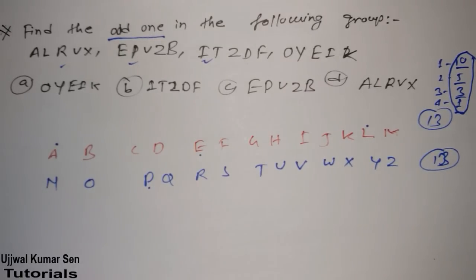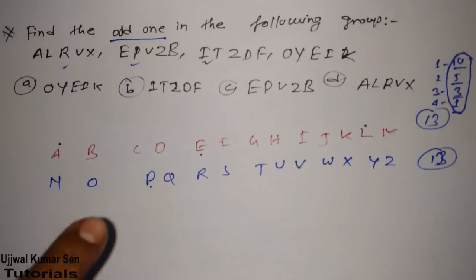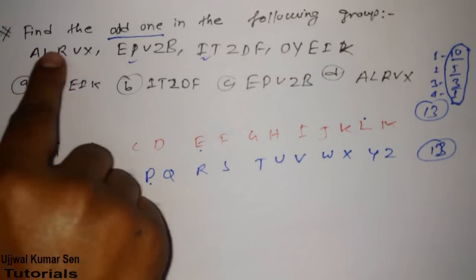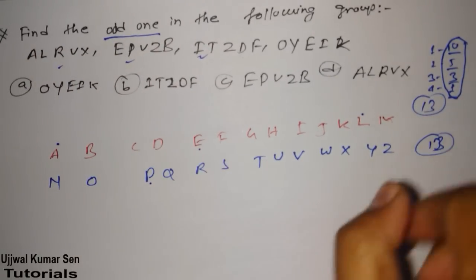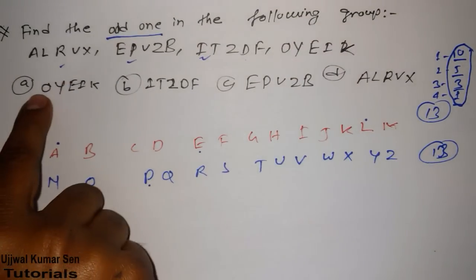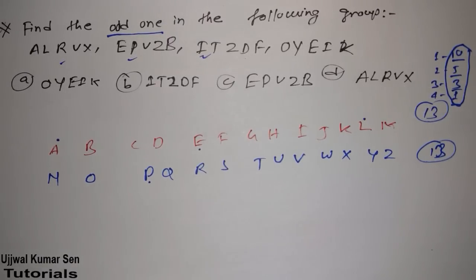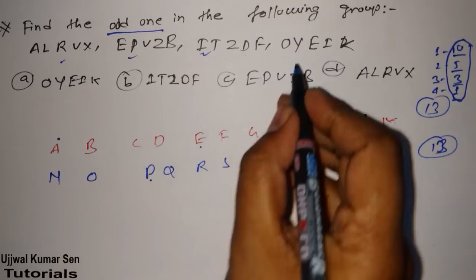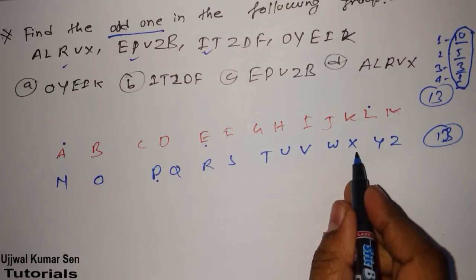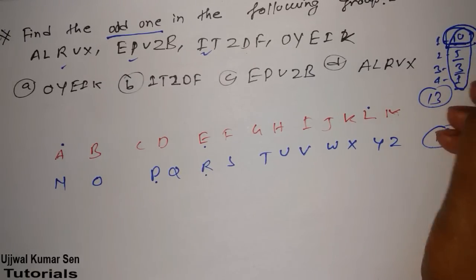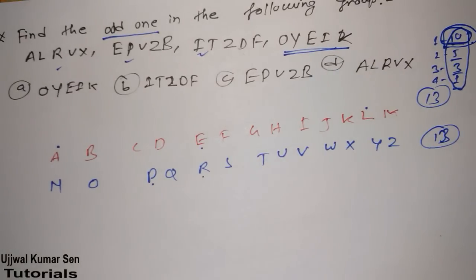Here is an important tip for the examination: if you are in this kind of situation and you have already found that three options follow the same series, you don't need to solve the question anymore — the remaining one is the right answer. You can mark it. But let me still show you where the odd one is: after O, checking the gaps — the pattern should be 3, 6, 9 and the first gap must be 10. That is why this option is odd.